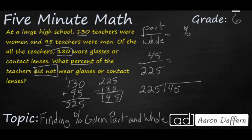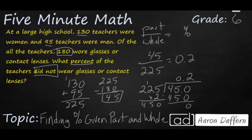225 does not go into 45, we know that, but we can go ahead and add a zero here. It looks like we might be able to just double this — let's see what happens when we multiply by two. It looks like we're going to get exactly what we need. So our answer is going to be 0.2, and we know that 0.2 is the same as 20%, because you move the decimal over once, twice. So sometimes you need to do a little bit of addition and subtraction to find the part or the whole if they don't give it to you.